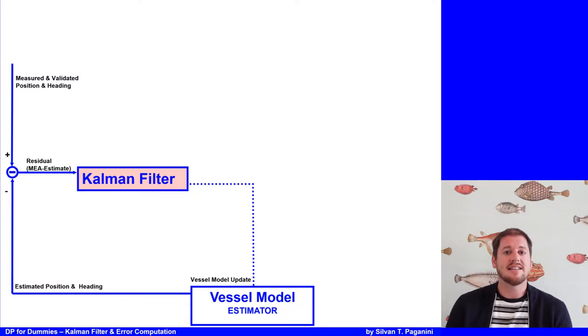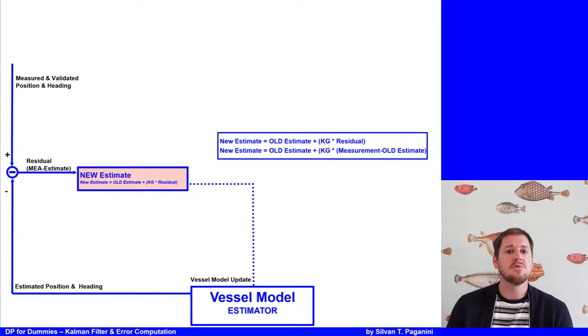The measured and validated position and heading are compared with the estimated position and heading. The residual is then thanks to the Kalman filter, where the Kalman gain will determine how much it will trust the estimate and how much the measurement. All formulas here are simplified. You find more information about external Kalman filter on the internet. In the first step, we calculate the new estimate for the next calculation circle. The simplified formula would be the old estimate plus the Kalman gain multiplied with the residual, whereas the residual is the measured minus the estimate.